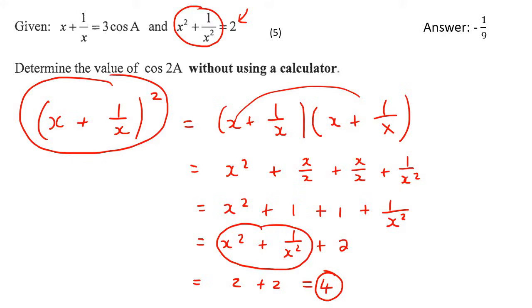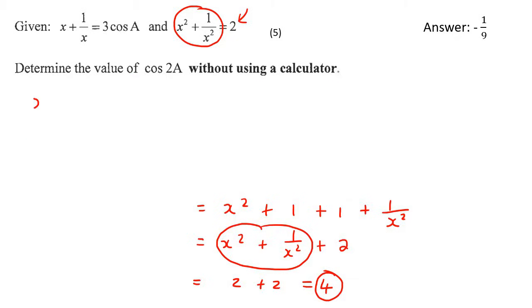So how are we actually going to use this in our question now? What I'm going to do is write down this original question. Then I'm going to square both sides, because mathematically, if you square both sides, that is allowed. Now, we know what this part becomes. It ends up becoming 4. But obviously, we're going to have to show them that. So it's going to become x plus 1 over x, and another x plus 1 over x. And then this part here just becomes 9 cos squared a.